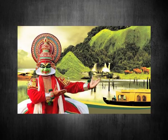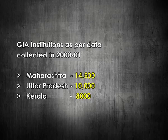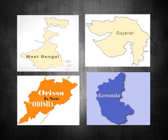In contrast, various states have tried to make judicious use of the GIA system by providing subsidies to primary and secondary levels equally. Kerala tops the list where GIA services for education have been put to maximum use. By number, Maharashtra, Uttar Pradesh, and Kerala have 14,500, 10,000, and 8,000 GIA institutions respectively, as per data collected in 2000-2001. Kerala has 50% of GIA institutions at all levels, while Maharashtra and Uttar Pradesh have approximately 50% aided institutions only at secondary and higher secondary levels.